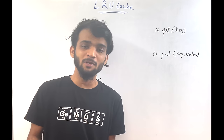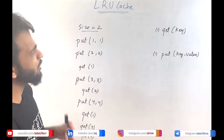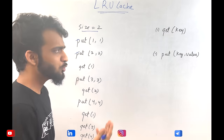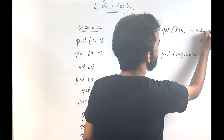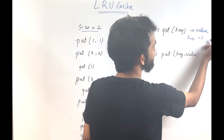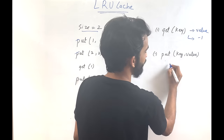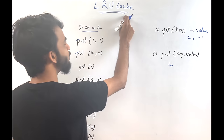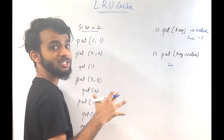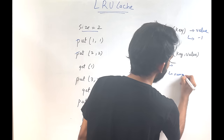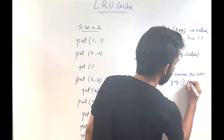Hey everyone, welcome back to the channel. Today we will be designing a data structure for a Least Recently Used (LRU) cache. This data structure has two functions: the get(key) function, which returns the value of the key if present or minus one if not, and the put(key, value) function, which inserts a key-value pair. If the cache is at full capacity, the least recently used entry is removed before inserting the new one.